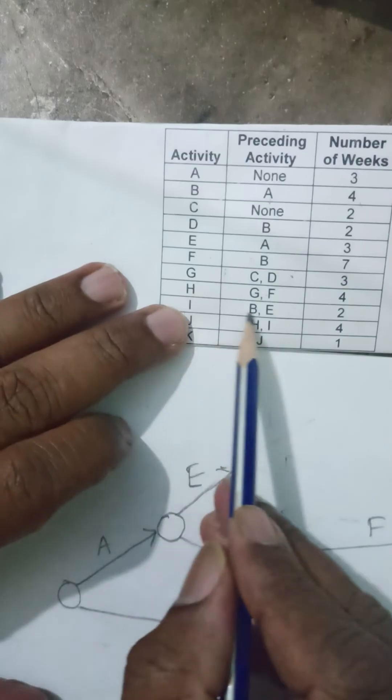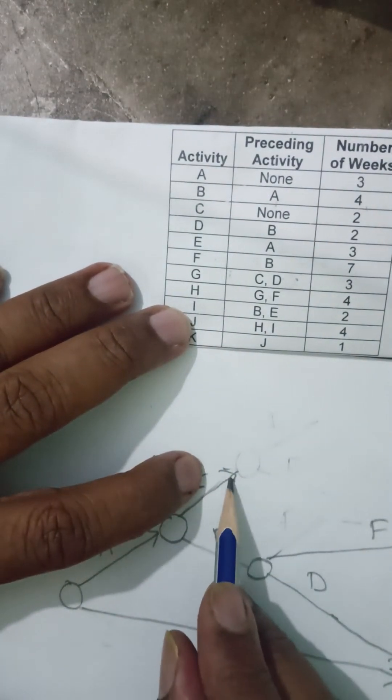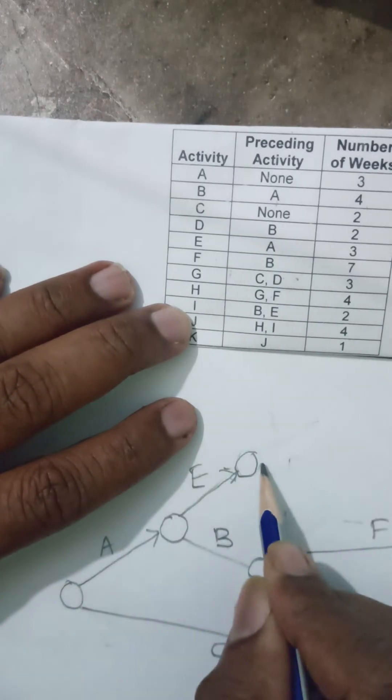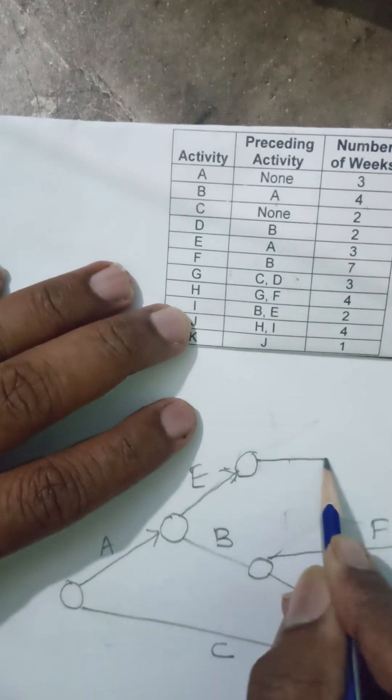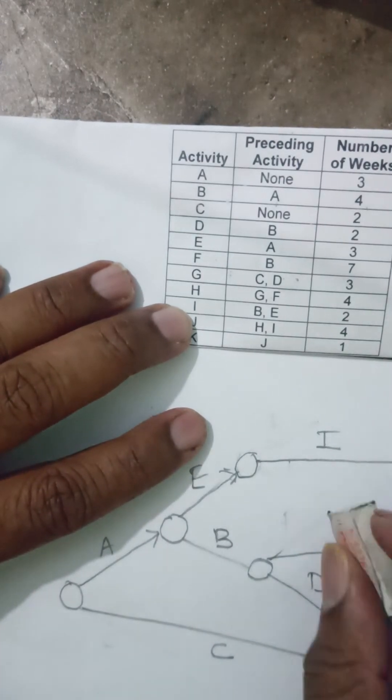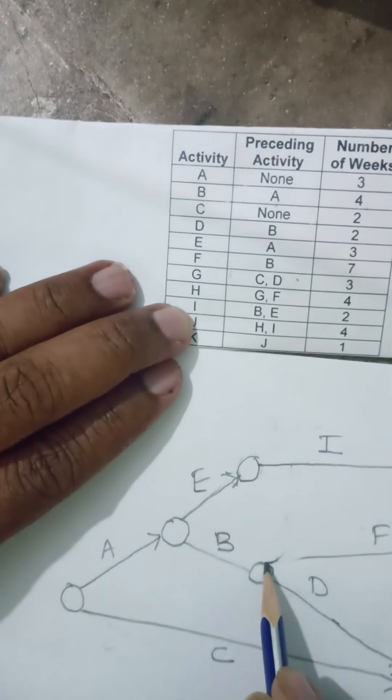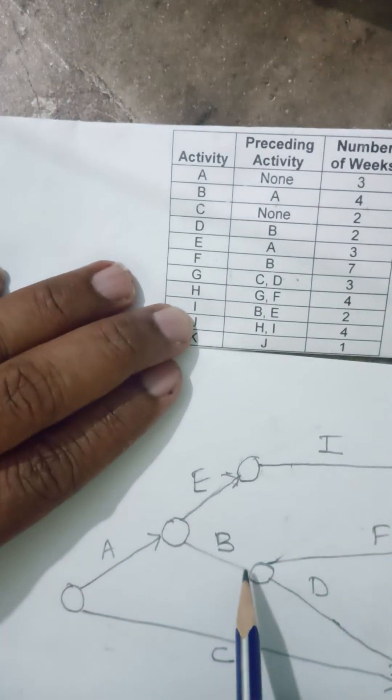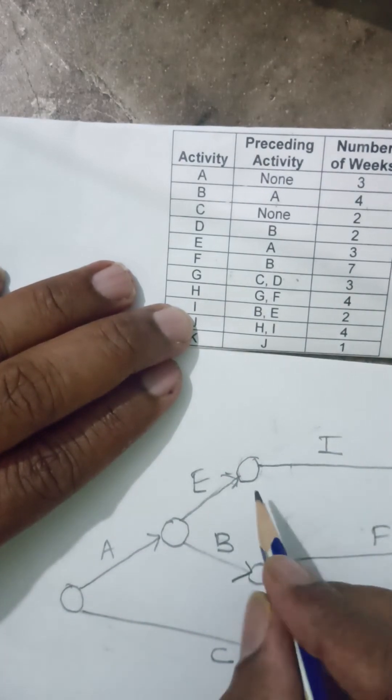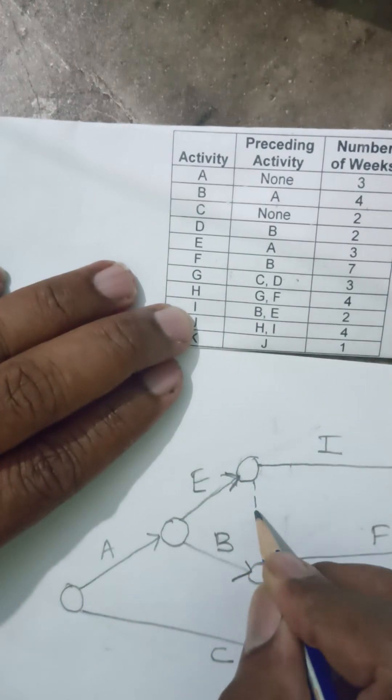I is from B and E. My B is here, E is here. From here suppose I want to start my I. But then the logic says that I cannot start I unless B is also finished.